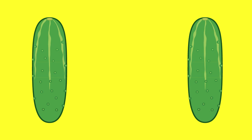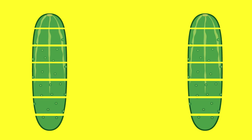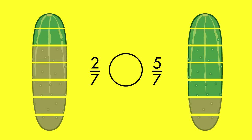To compare fractions that have the same denominators, look at the numerators. The fraction with the larger numerator is greater. Two parts of seven is less than five parts of seven. Two-sevenths is less than five-sevenths.